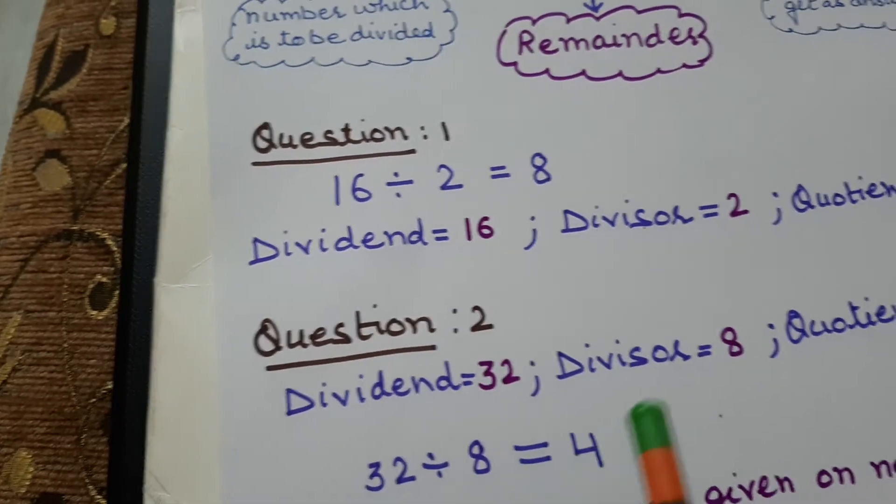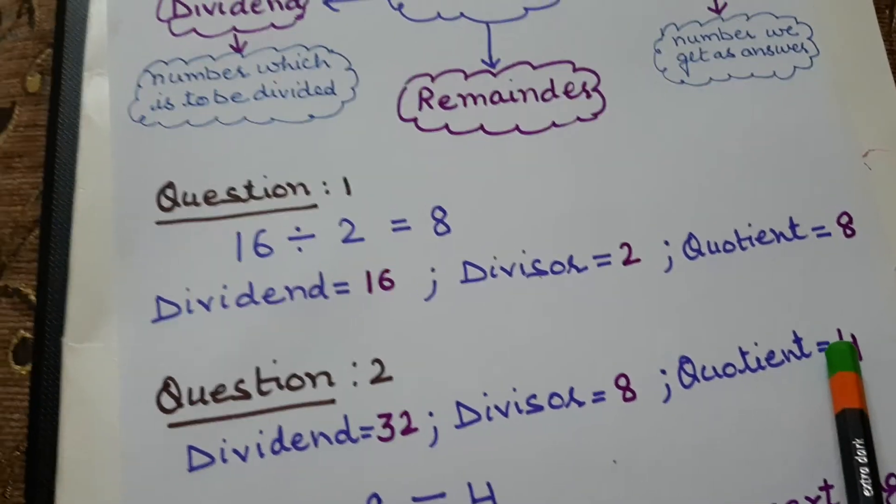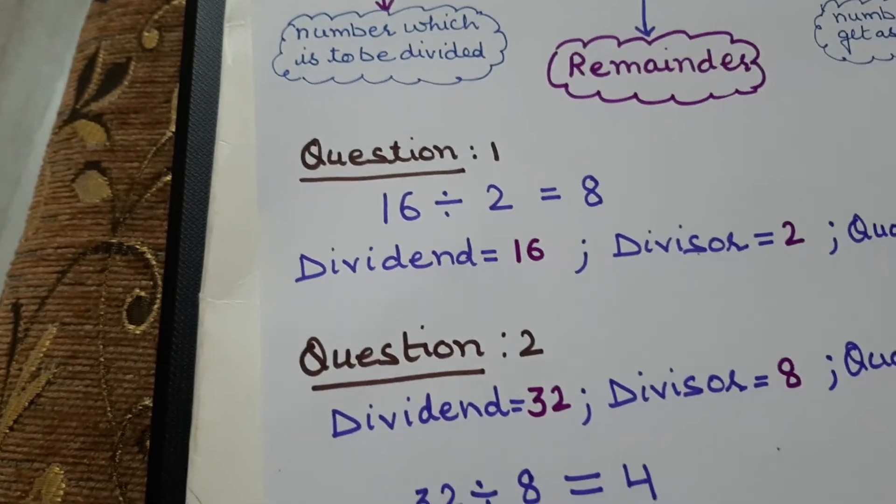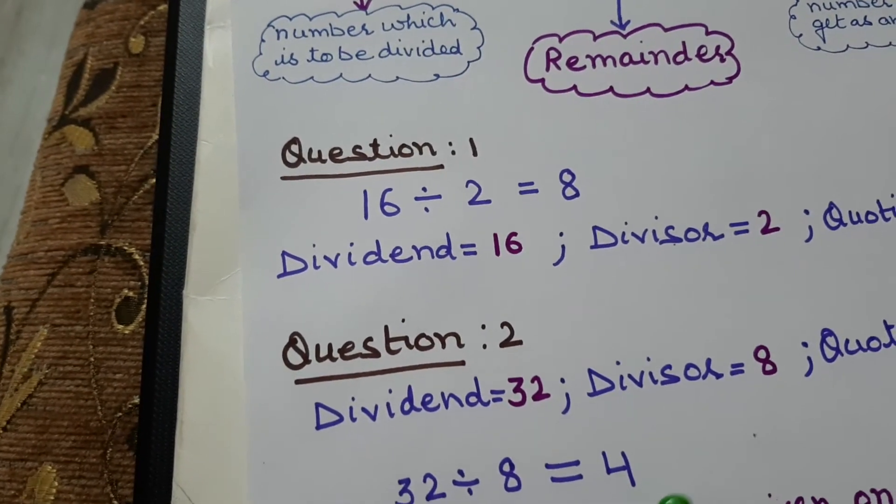So which number we are getting as answer? Quotient. So that will be here. So 32 divided by 8 is equal to 4 is the answer.